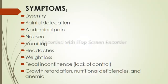The symptoms of Trichuris trichiura infection include dysentery or bloody diarrhea, painful or frequent defecation, abdominal pain, nausea, vomiting, headache, sudden and unexpected weight loss, fecal incontinence or inability to control defecation, growth retardation, weight loss, nutritional deficiencies, and anemia due to long-standing blood loss.